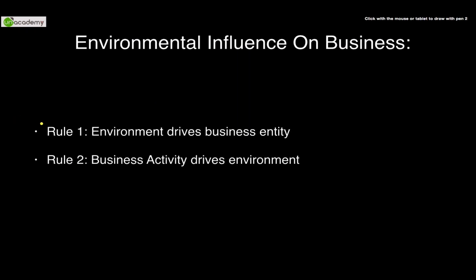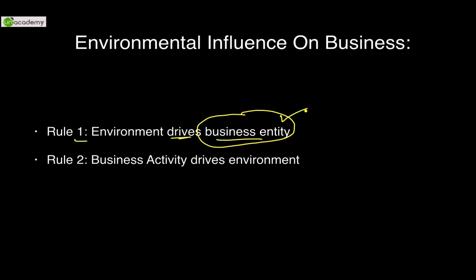The environmental influence of business has two rules. First: the environment drives a business entity. Whichever environment we are operating in, it drives the business entity. In Kashmir, the environmental conditions, the type of customers, and the type of government policies would drive a market for a woolen business entity — whoever is manufacturing woolens. Rule two says business activity also drives the environment. So both rules are interconnected.